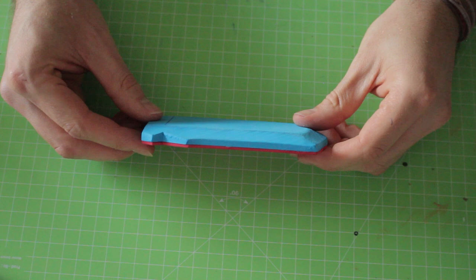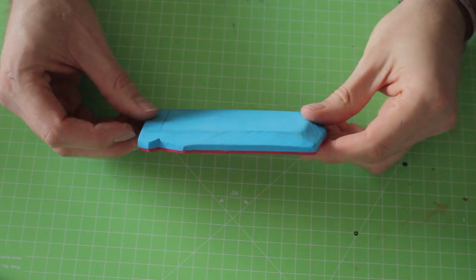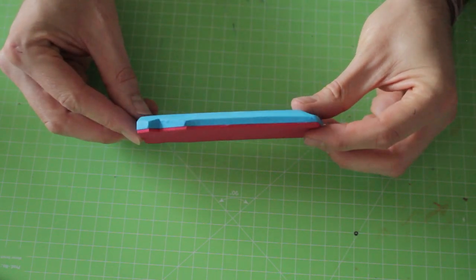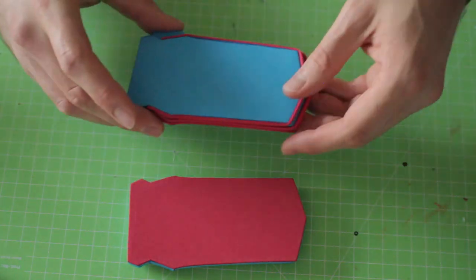I used 1cm foam as a base and beveled the edges accordingly. To make it even thicker I glued a layer of 2mm craft foam onto it.